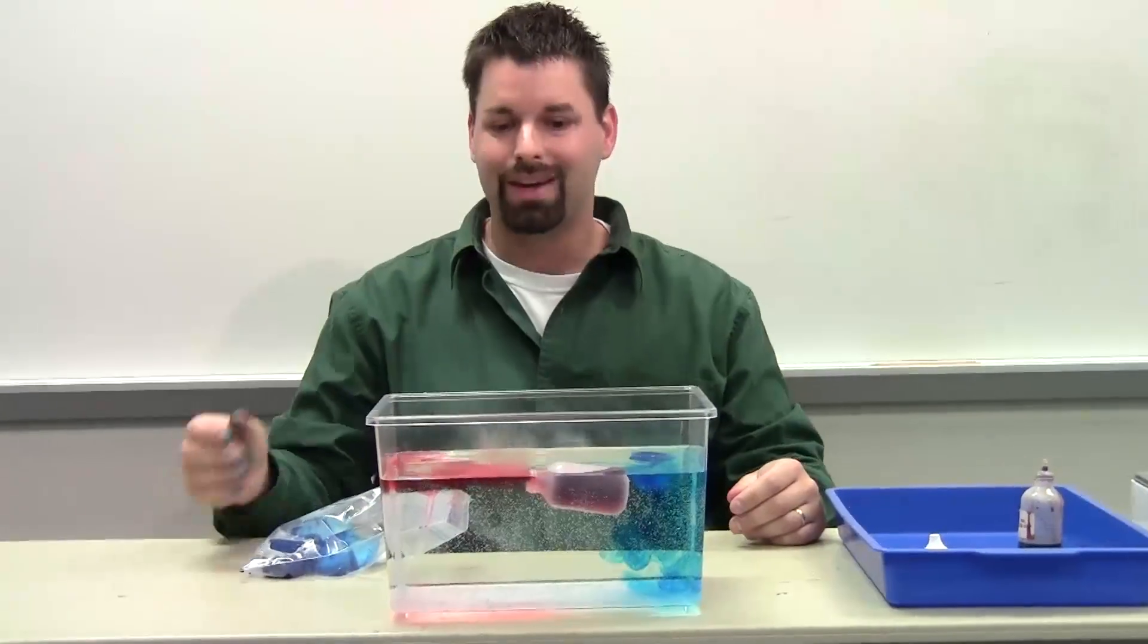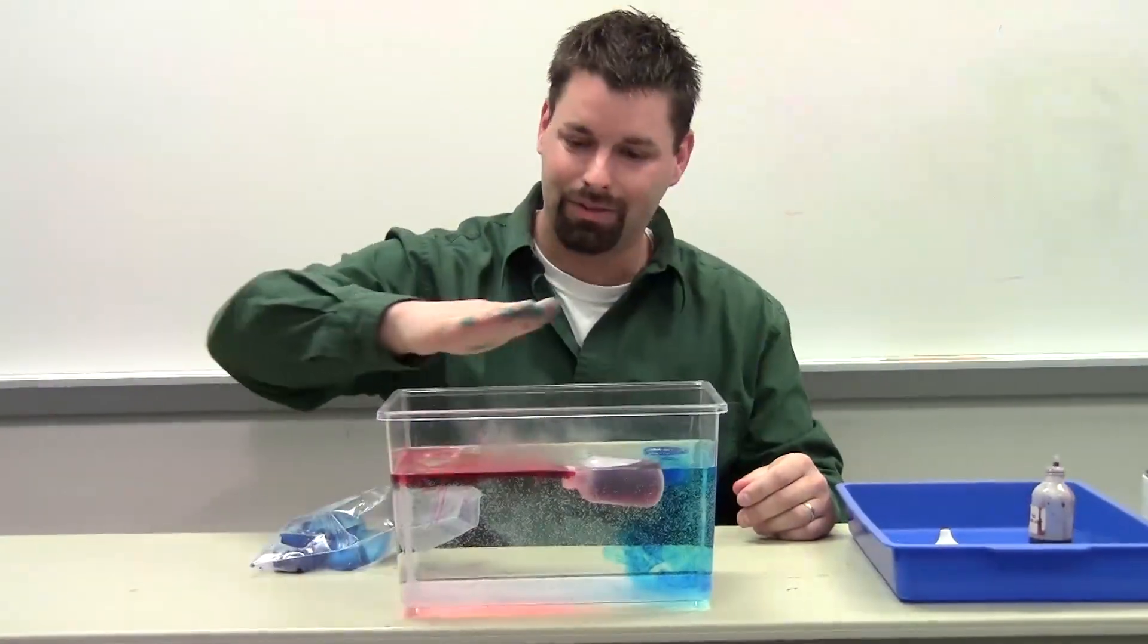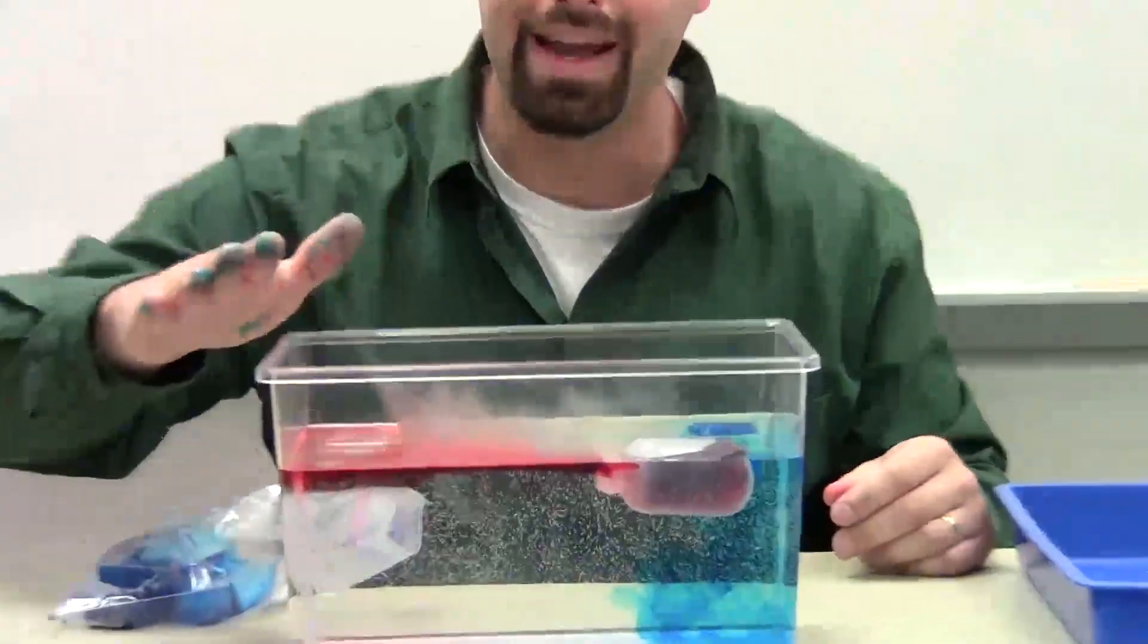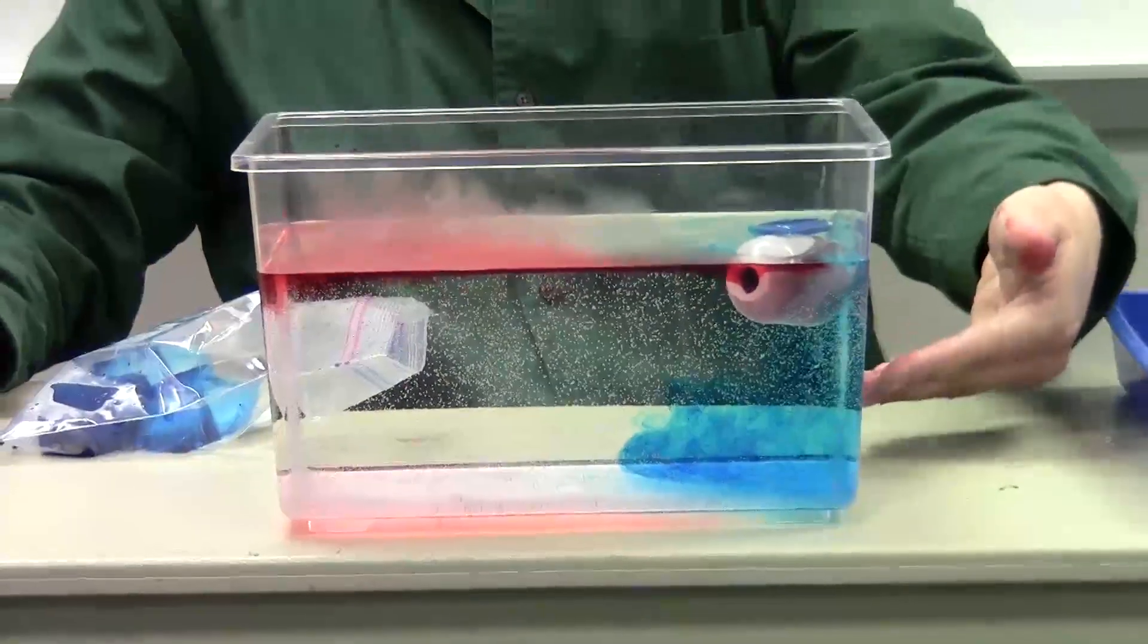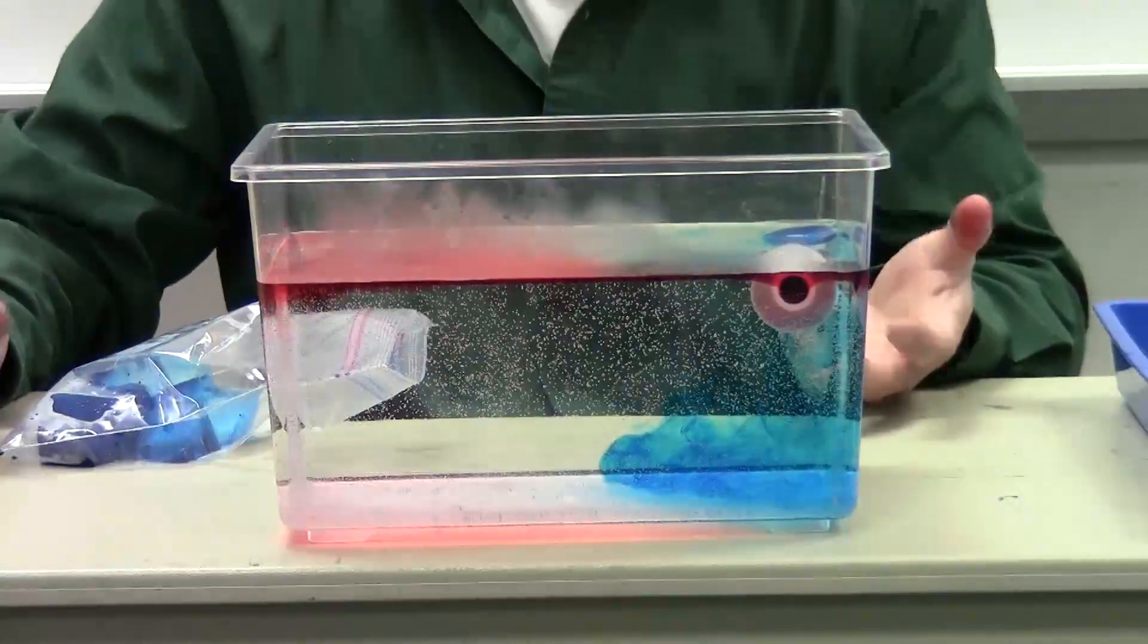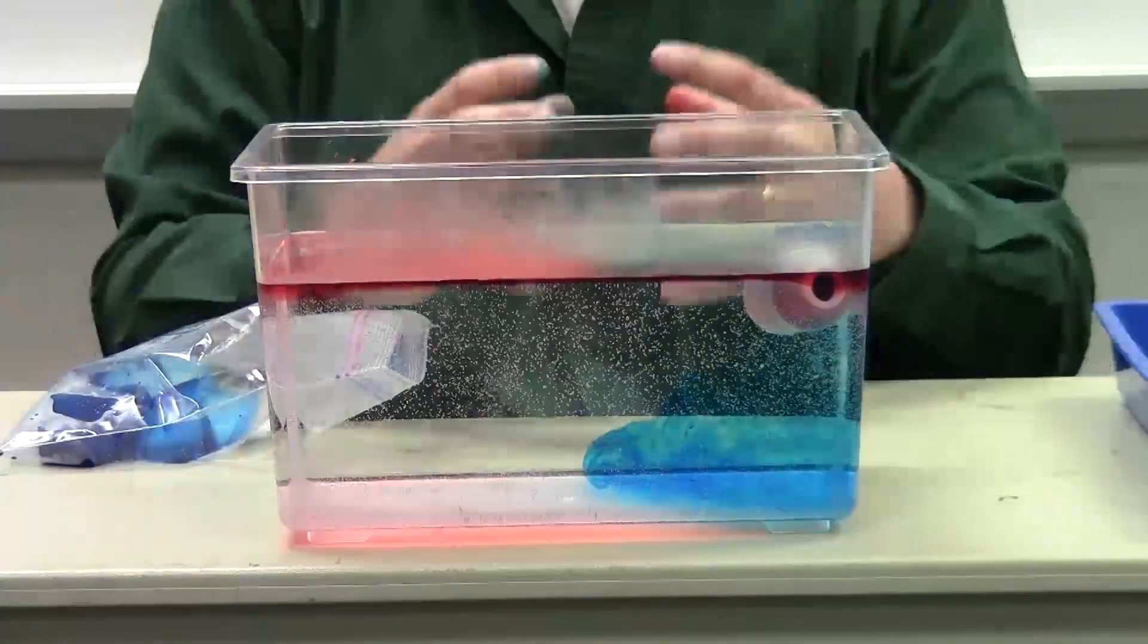The red, because it's hot, is just floating on top. It's less dense. The blue is cold, now you can start seeing it sink down. You can see the blue swirl down to the bottom. Why? It's more dense.